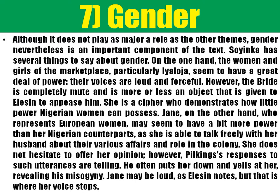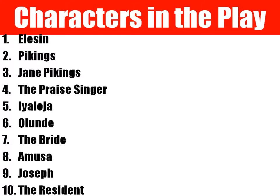Now let's look at the major characters in the play. There are ten major characters. We have Elesin, who is the chief and the king's horseman, supposed to die 30 days after the king died. Elesin himself prepared to die but was deterred from that goal by Pilkings. Elesin is a loud, vivacious man who enjoys the pleasures of the living.